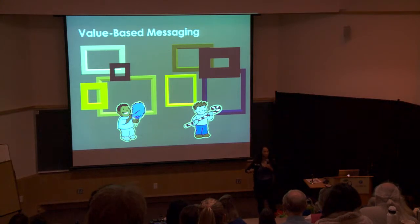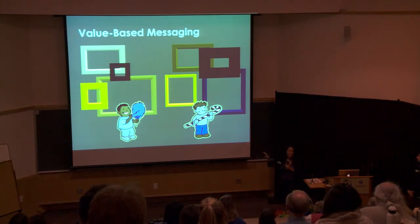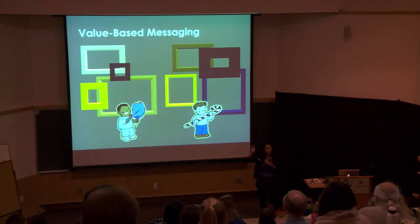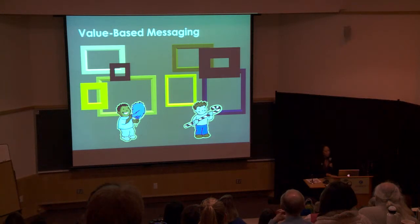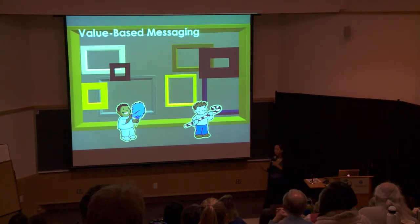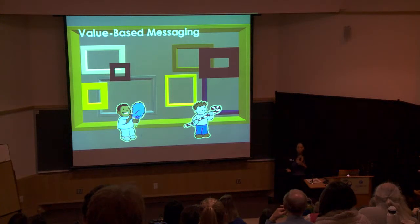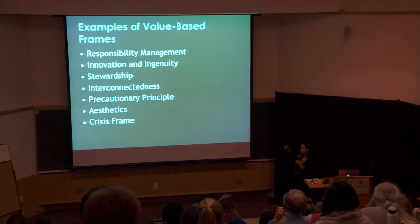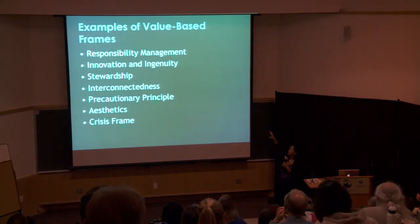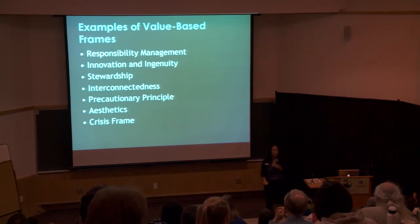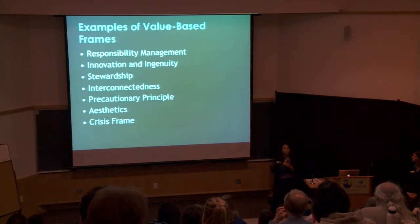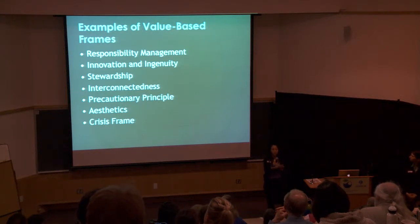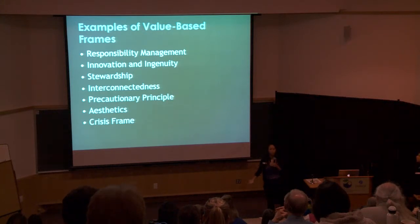These two gentlemen both happen to like candy, but different kinds — which makes it trickier. In order to capture both of them, we have to find a more universal frame, a really big frame. So we encourage our staff to recognize what these big frames are and put them into practice as they go out on the floor and interpret with small groups. One frame is responsibility management — the idea of 'do this for your children and your children's children': manage this resource so future generations will have it as well.